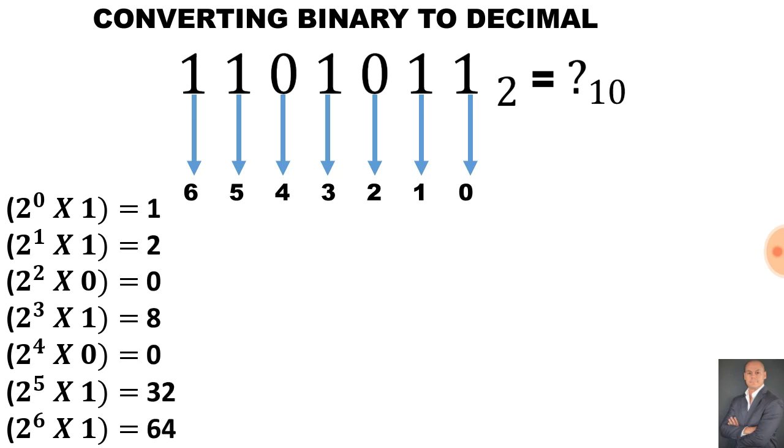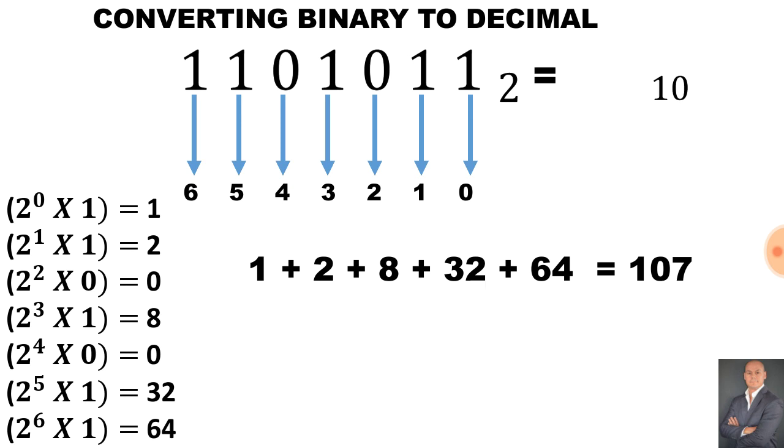So let's add up all these decimal numbers. 1 plus 2 plus 8 plus 32 plus 64 is equal to 107. Therefore, the decimal number is 107 for this binary number.